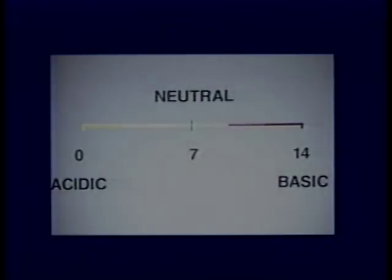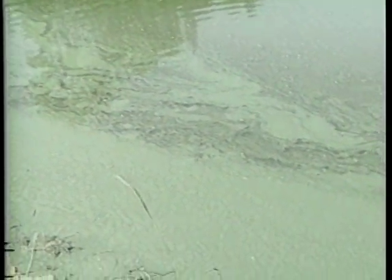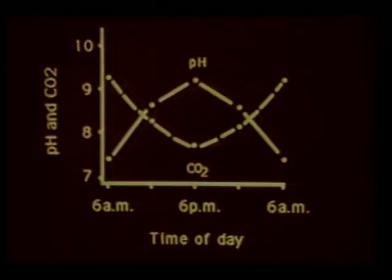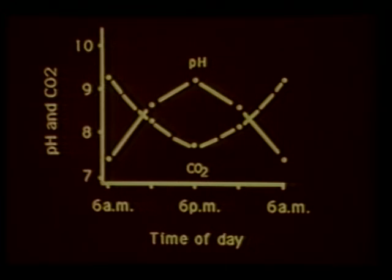The pH scale ranges from 0 to 14, with 7 being neutral. Waters with pH values below 7 are termed acidic; those with values above 7 are said to be basic. The greater the departure from pH 7, the more acidic or basic the water is. The pH of a pond is directly influenced by the concentration of carbon dioxide in the water. Carbon dioxide is taken up by phytoplankton during the day as photosynthesis occurs. Since carbon dioxide is an acidic substance, pH rises when it is removed. As photosynthesis ceases during the night, carbon dioxide is returned to the water by phytoplankton respiration and pH falls. The degree of fluctuation in pH is directly influenced by the buffering capacity of the water, which is its resistance to changes in pH. The buffering capacity is in turn determined primarily by total alkalinity and to a certain extent total hardness levels of the pond.